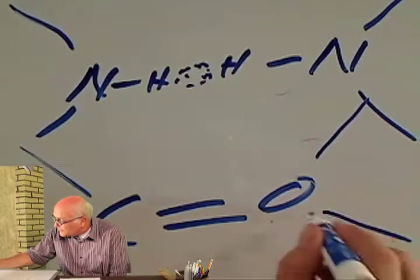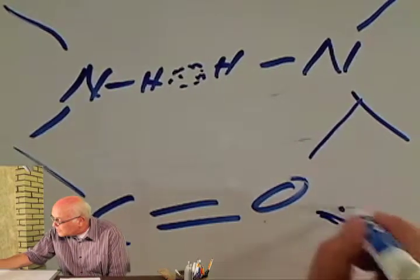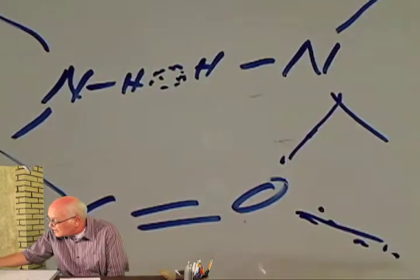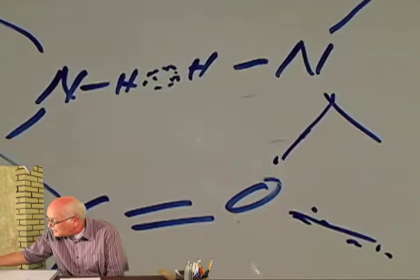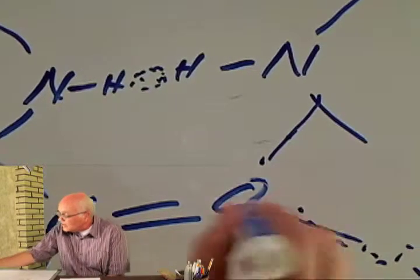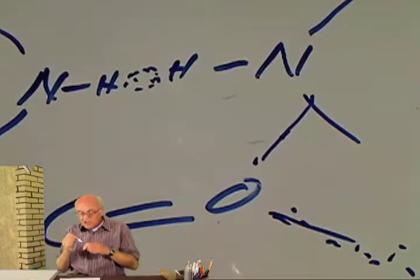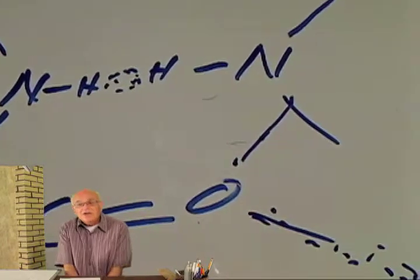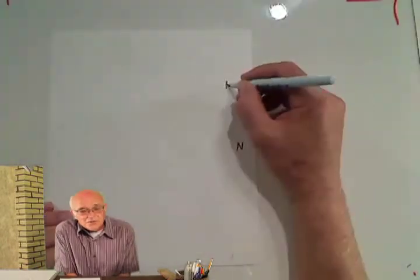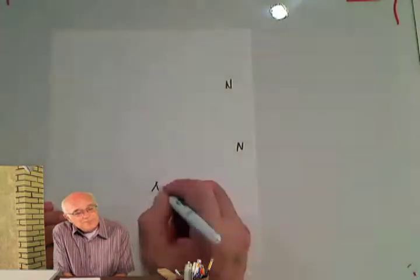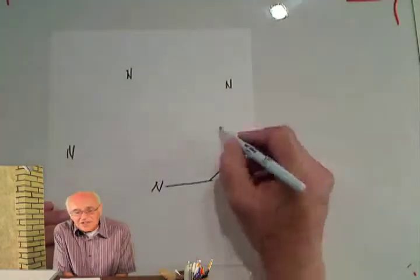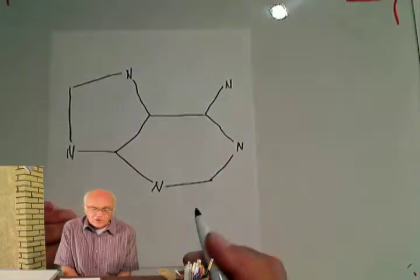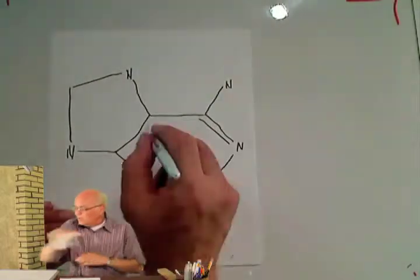These two clouds extending from the carbonyl oxygen allow it to make a bond with another molecule. So the carbonyl oxygen is also set up for hydrogen bonds. Hydrogen bonds are sort of like the electron clouds gently liking each other — it's not a very strong bond at all.